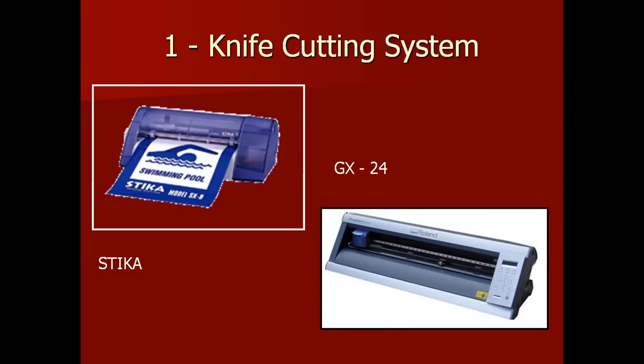Going up to the more expensive machines, this is a GX-24 which is a much larger knife cutting machine with an optical alignment system built in as well. There's actually a separate tutorial video that I've put together on how to use the Opus or optical alignment system.